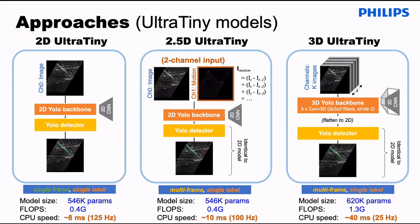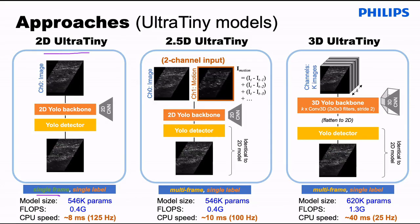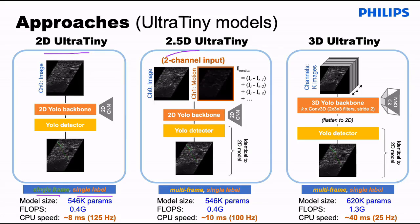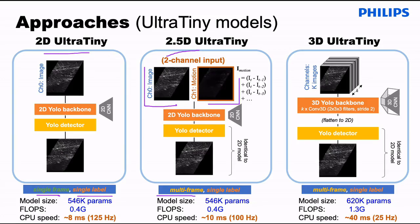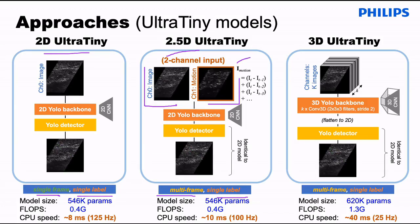This slide shows the three different approaches used in this work, starting with a standard 2D baseline approach, where we feed in a single image and predict a single label for the frame of ultrasound. The second approach was a 2.5D approach — a two-stream neural network that captures both appearance information for a single ultrasound frame and motion information. In this approach, we feed in multiple frames but still predict a single label for the final frame in the sequence. For the motion stream, we utilize a compounded difference image.